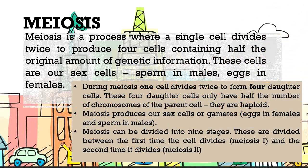Meiosis is the process where a single cell divides twice to produce four cells containing half the original amount of genetic information. These cells are our sex cells — sperm in males and eggs in females. This is a review and reinforcement of our existing knowledge about cells. During meiosis, one cell divides twice to form four daughter cells. These four daughter cells only have half the number of chromosomes of the parent cell — they are called haploid. Meiosis produces our sex cells, or gametes.